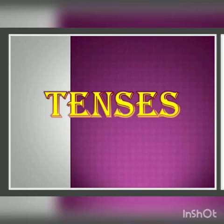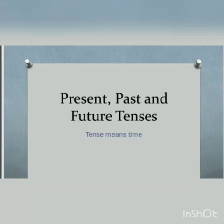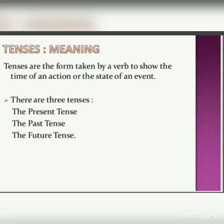Tenses are the form taken by a verb to show the time of an action or the state of an event. Since the tense of a sentence tells us when an action has taken place, it could be present, past, or future. In this lesson, we will be discussing the first type of tense: the present tense.